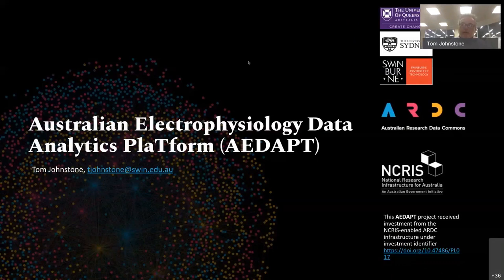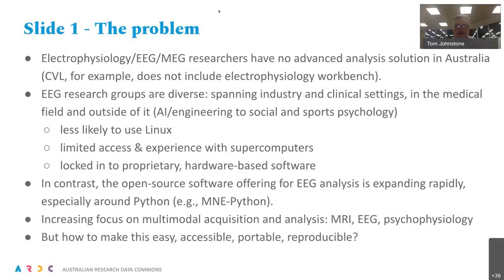I'm Tom Johnston, Professor of Cognitive Neuroscience at Swinburne University, and at Swinburne we're also a node of the National Imaging Facility. Our focus is on MEG and EEG data — that's magnetoencephalography and electroencephalography — and related techniques using electrophysiology. The platform we've established addresses the need across the electrophysiology, EEG and MEG research communities for an advanced analysis platform, because currently there simply isn't one.